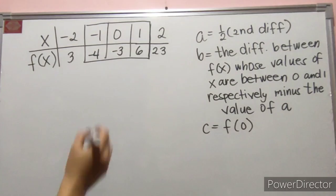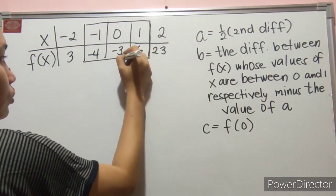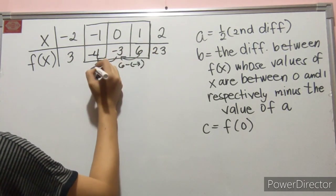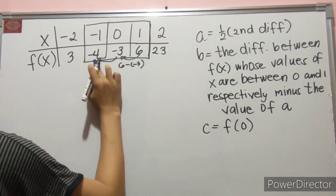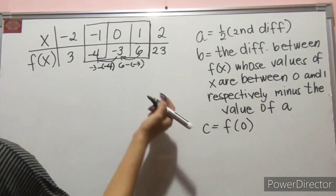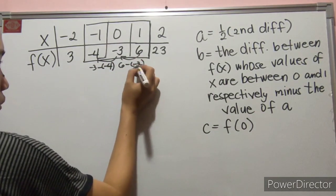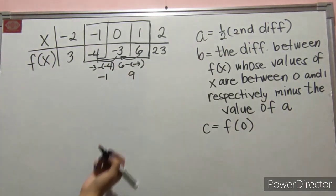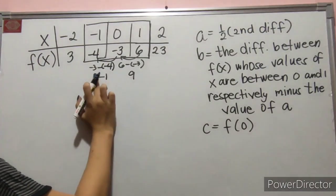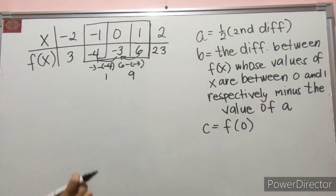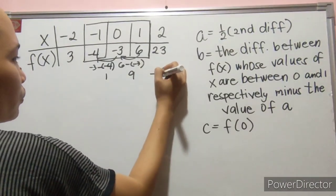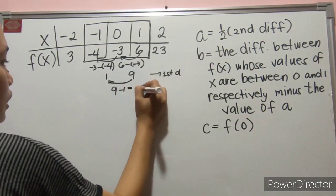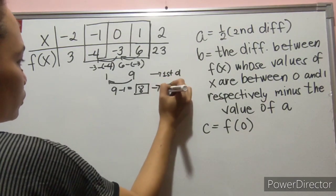Ganun pa rin ang paghanap ng first difference. We have 6 minus negative 3, and negative 3 minus negative 4. This will give us 6 plus 3, which is 9, and then ito ay positive 1. Tapos yung 4. Ayan. This is my first difference, and then yung papag-second difference na — so, this is the second difference.